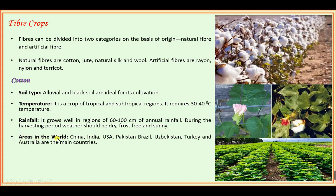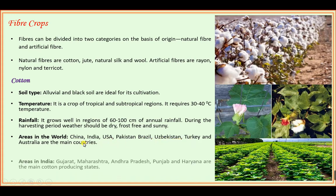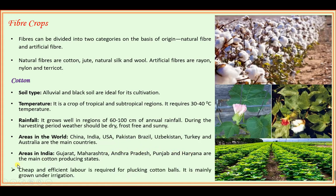Areas in the world where cotton is grown well include China, India, USA, Pakistan, Brazil, Uzbekistan, Turkey, and Australia. Areas in India: Gujarat, Maharashtra, Andhra Pradesh, Punjab, and Haryana are the main cotton-producing states.